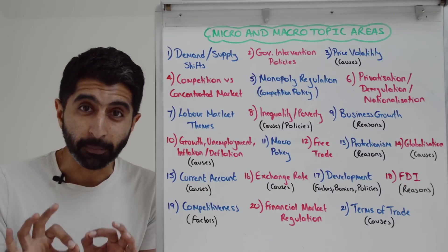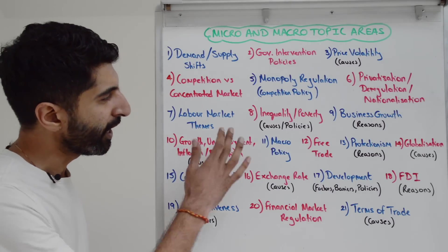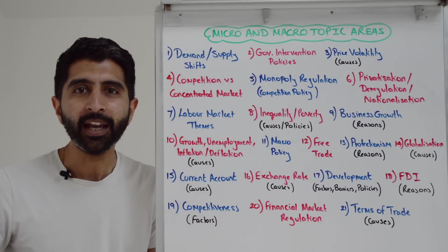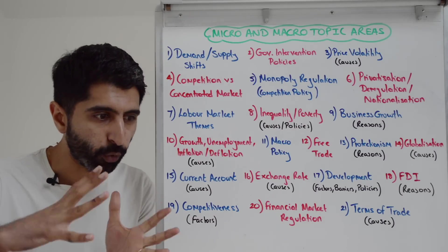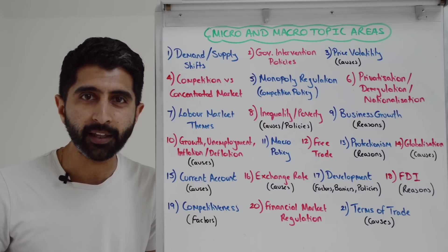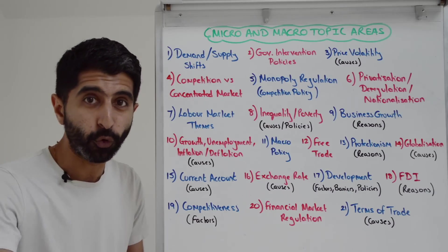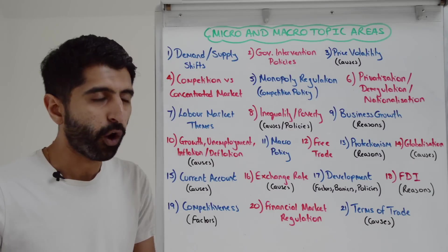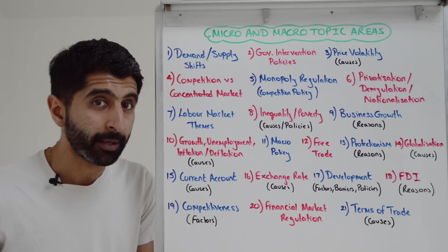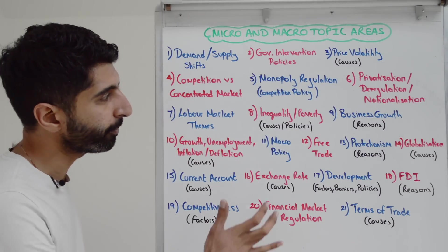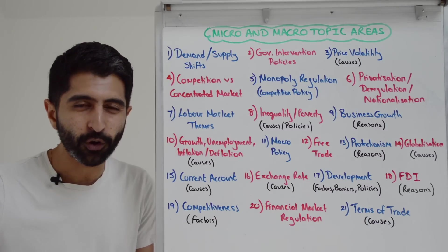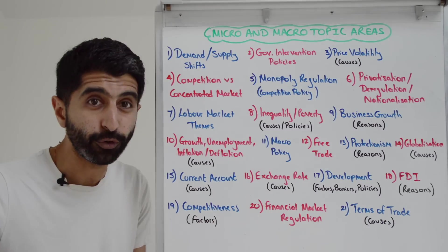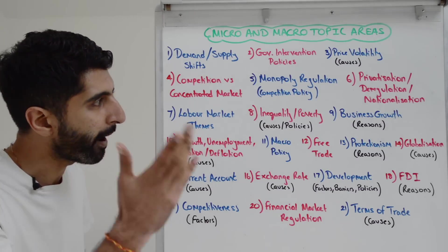Labor market themes are very commonly assessed in Paper 3. Themes like the role of trade unions, the impact of strikes, the impact of labor shortages, the role of the gig economy and flexible labor markets, wage differentials — causes and effects of wage differentials — but also minimum wage: the effects of an increase in the minimum wage or just the minimum wage being there in the first place. Inequality and poverty — the consequences can be micro and macro in nature, but also causes and policies to reduce it — bear in mind there too.